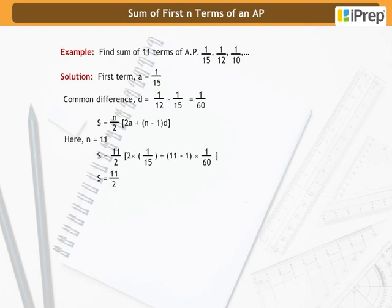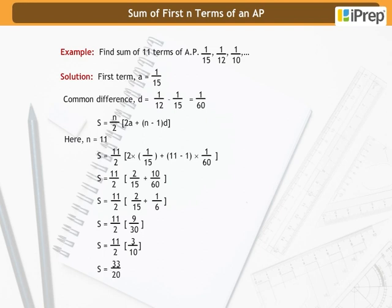Or S equals 11 by 2 into 2 by 15 plus 10 by 60, or simply 11 by 2 into 9 by 30, which equals 11 by 2 into 3 by 10, or S equals 33 by 20. Therefore, the sum of 11 terms of the AP is 33 by 20.